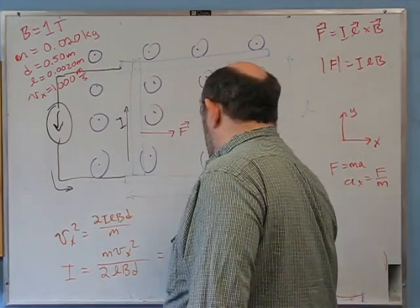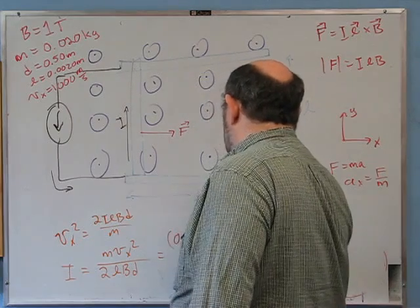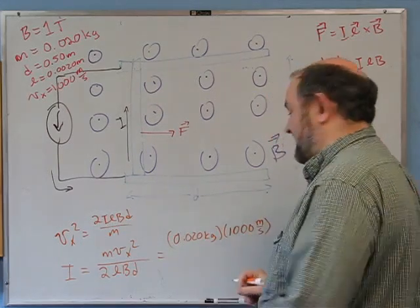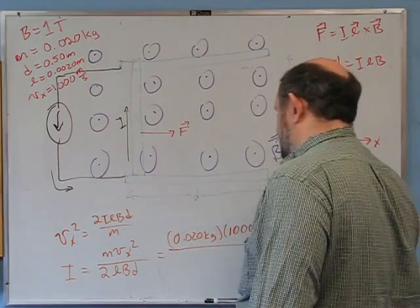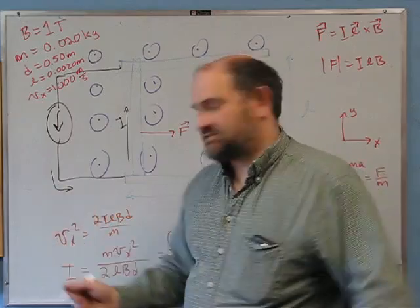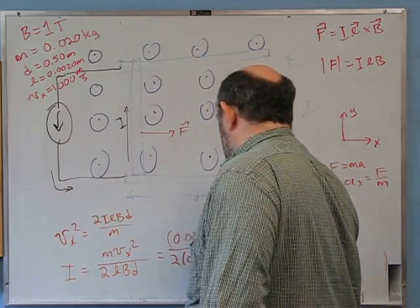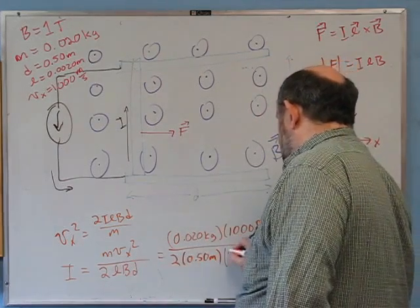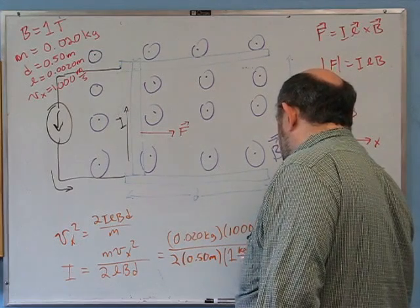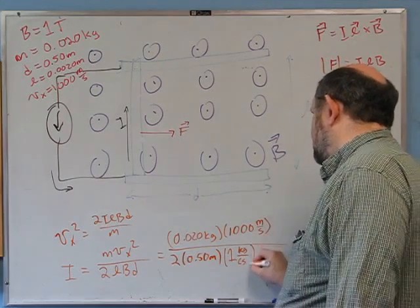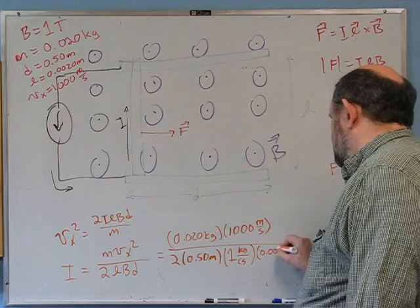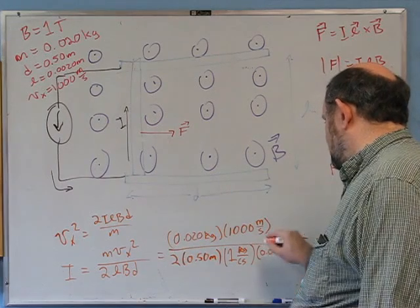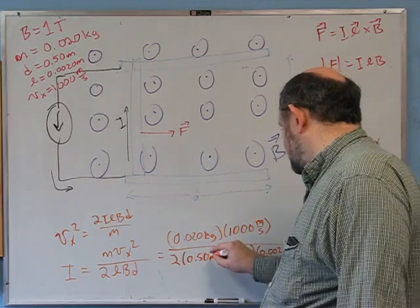With m = 0.020 kg, Vx = 1000 m/s (about three times the speed of sound), L = 0.50 m, B = 1 tesla (kilogram per coulomb·second), and D = 0.002 m, the unit check gives coulombs per second. Sticking these into the calculator gives 10⁷ amps — 10 million amps.